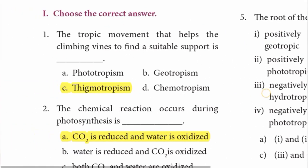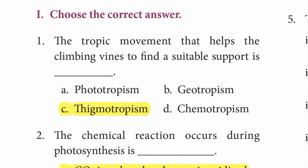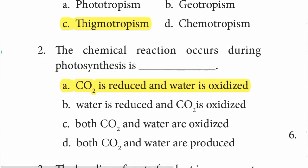Room number 1 - Choose the correct answer. First one: the tropic movement that helps climbing vines to find a suitable support is thigmotropism. Answer is option C - thigmotropism. Second one: the chemical reaction that occurs during photosynthesis is option A - CO2 is reduced and water is oxidized.